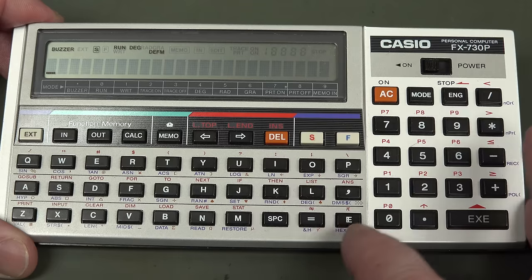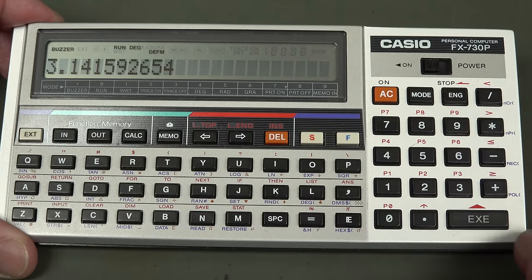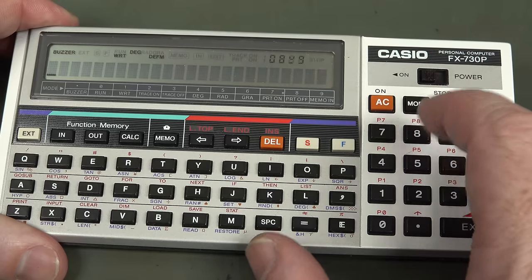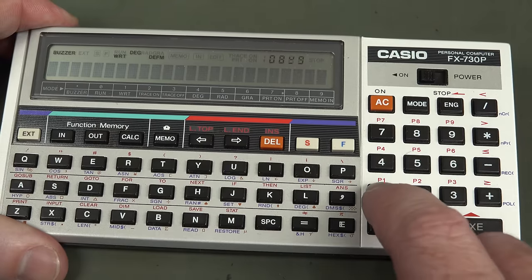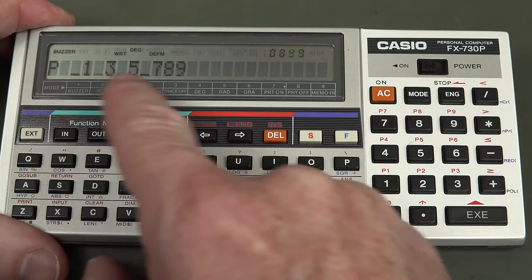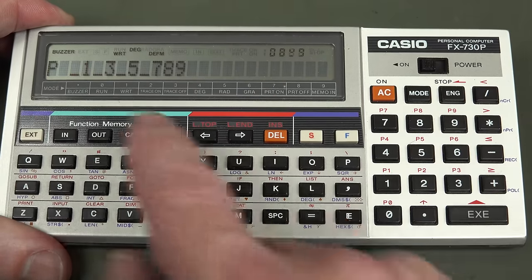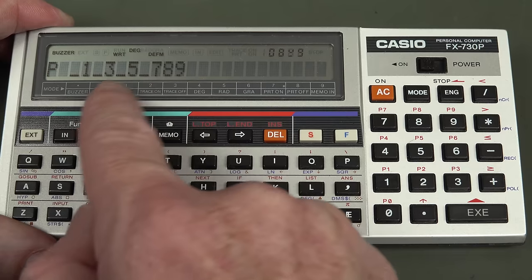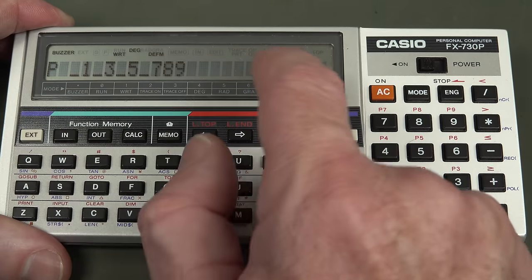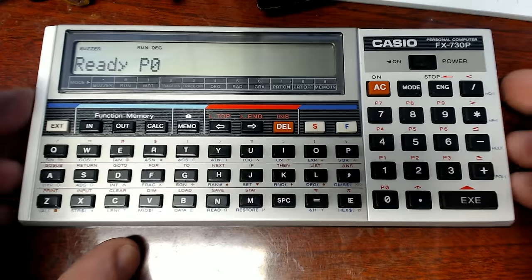We can go a long way. All the way with LBJ. How many decimal places do we get on pi? If we actually go mode WRT, this shows us we've got these different program modes, P0 through to P9, so ten different programs, presumably, that we can put into this bad boy.